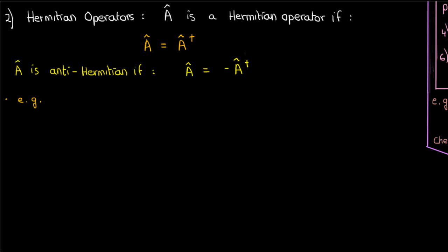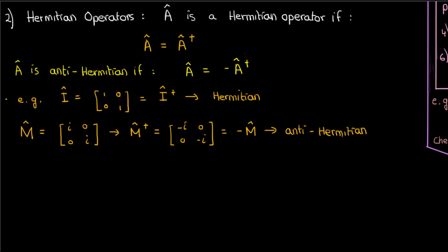Now an example of Hermitian operators is the 2x2 identity operator, obviously because it's equal to its conjugate transpose. Meanwhile, the matrix M given by i, 0, 0, i has a Hermitian conjugate of negative i, 0, 0, negative i, which is just negative M hat. So here, M hat would be anti-Hermitian.